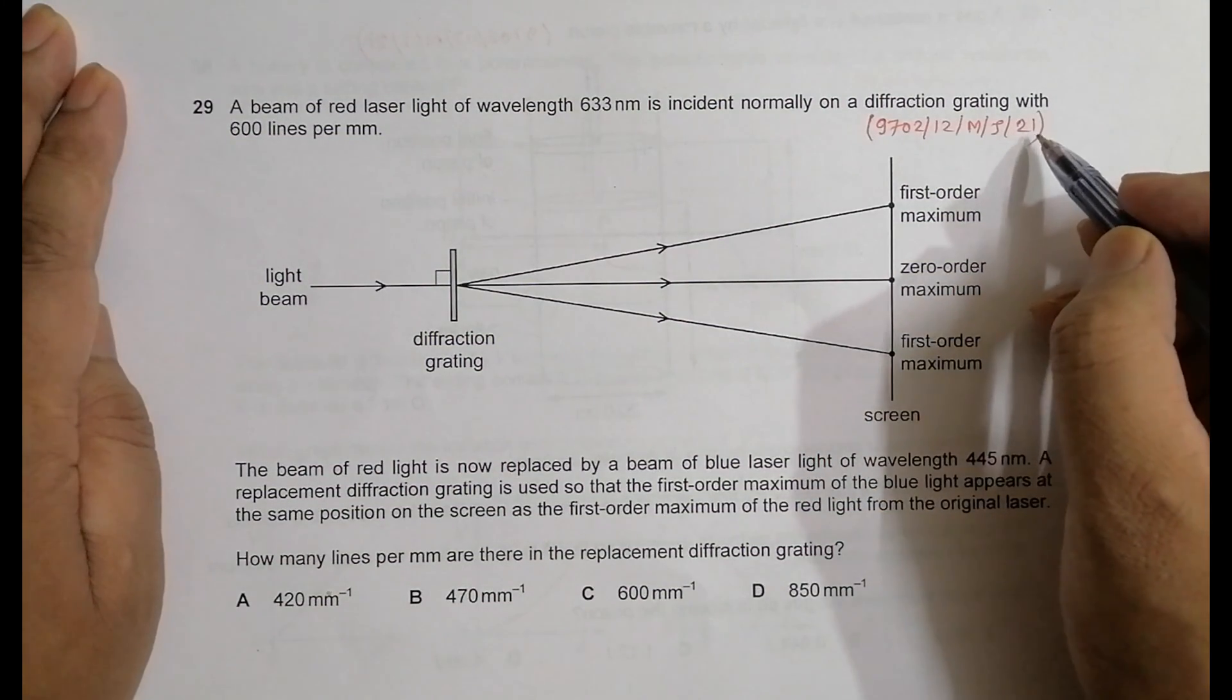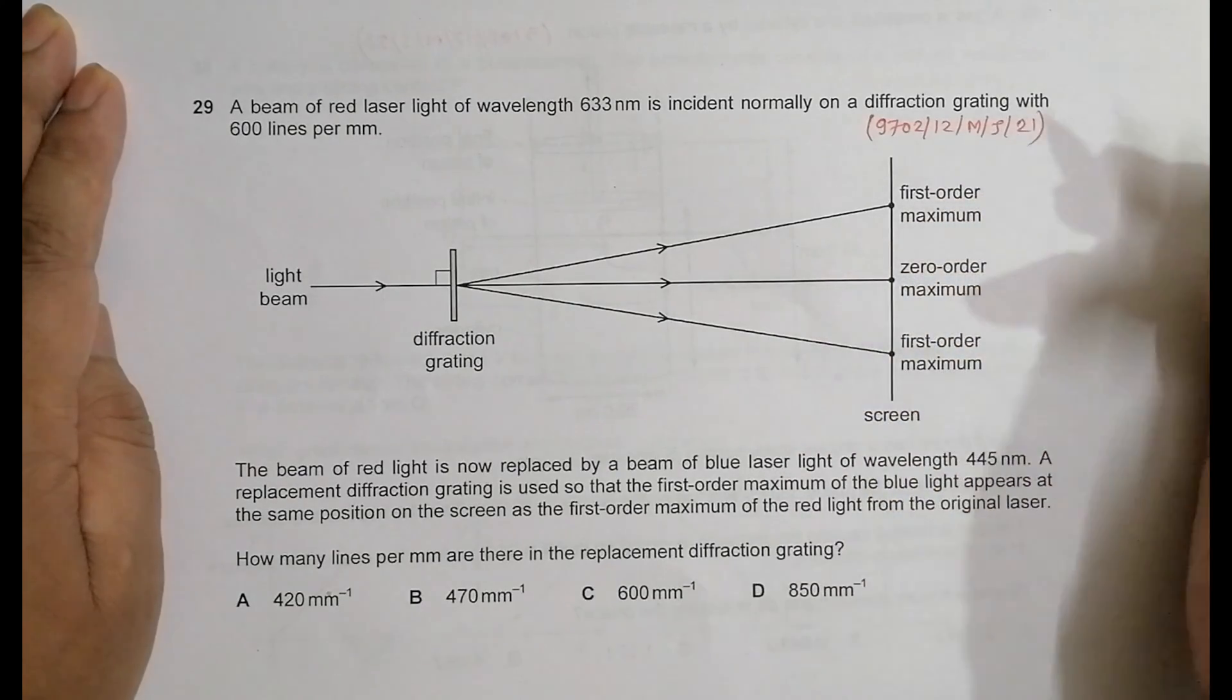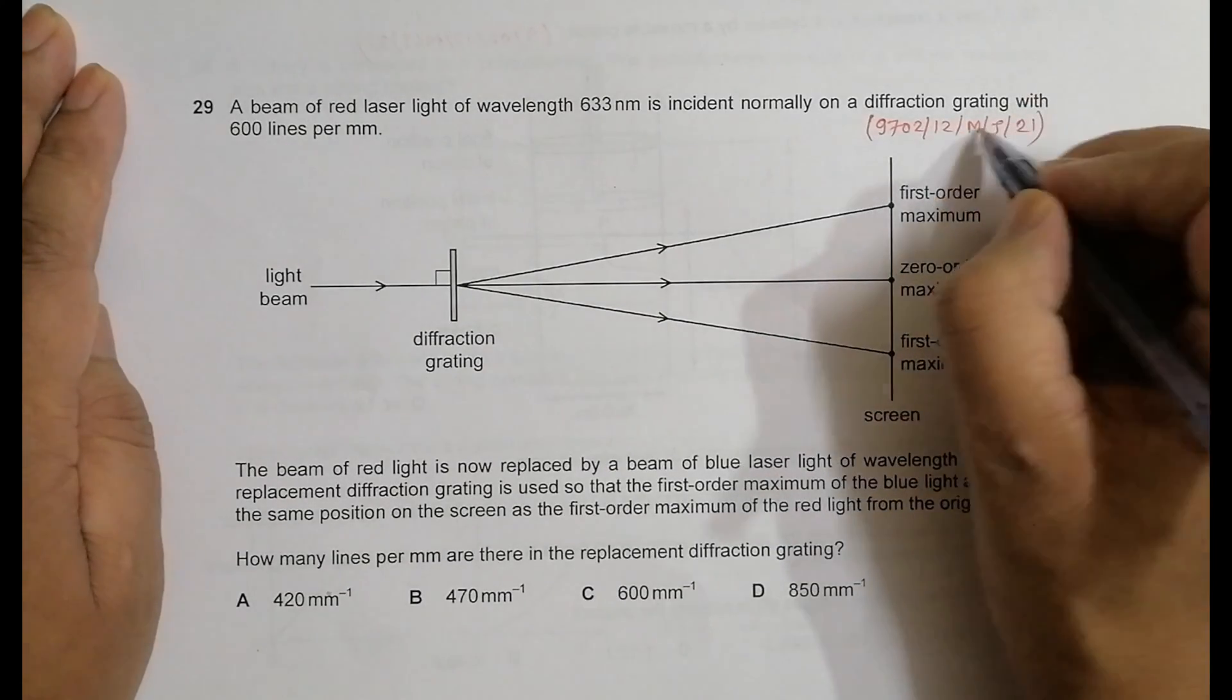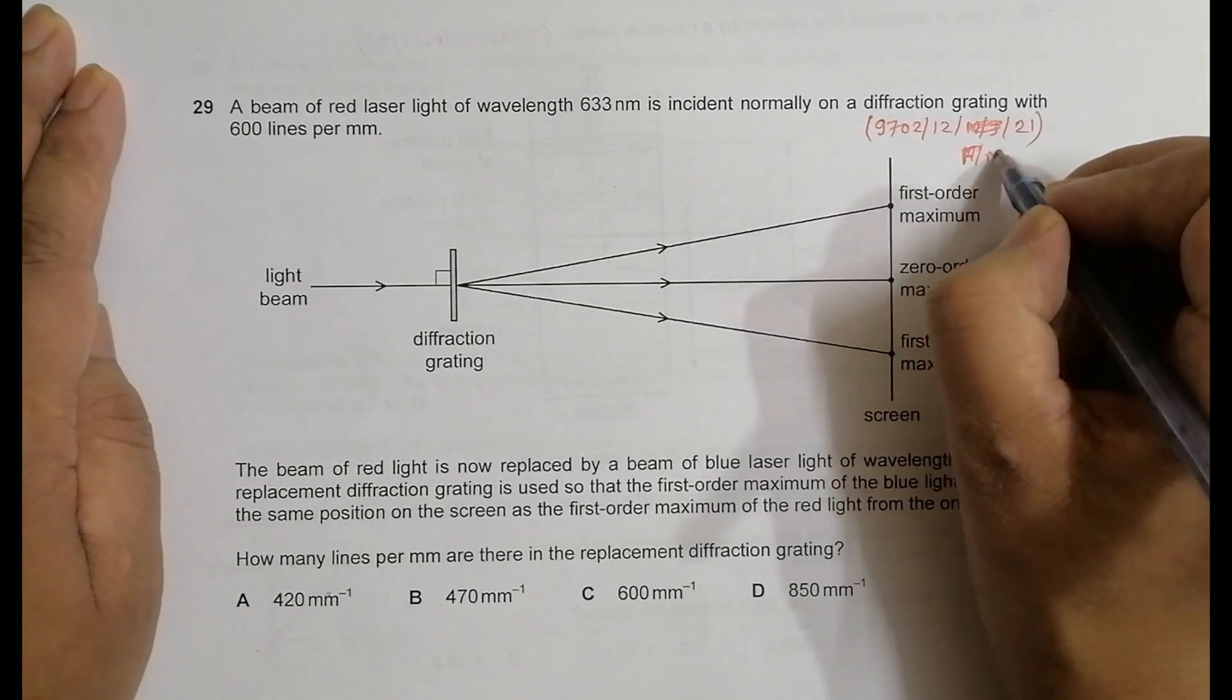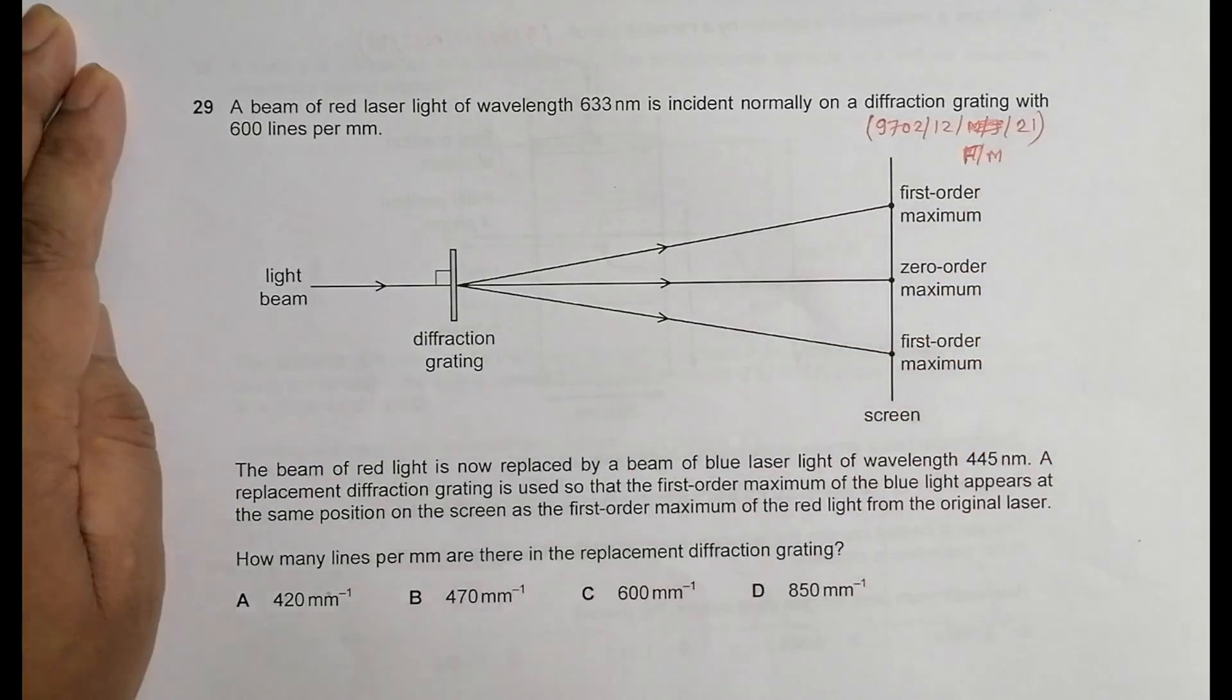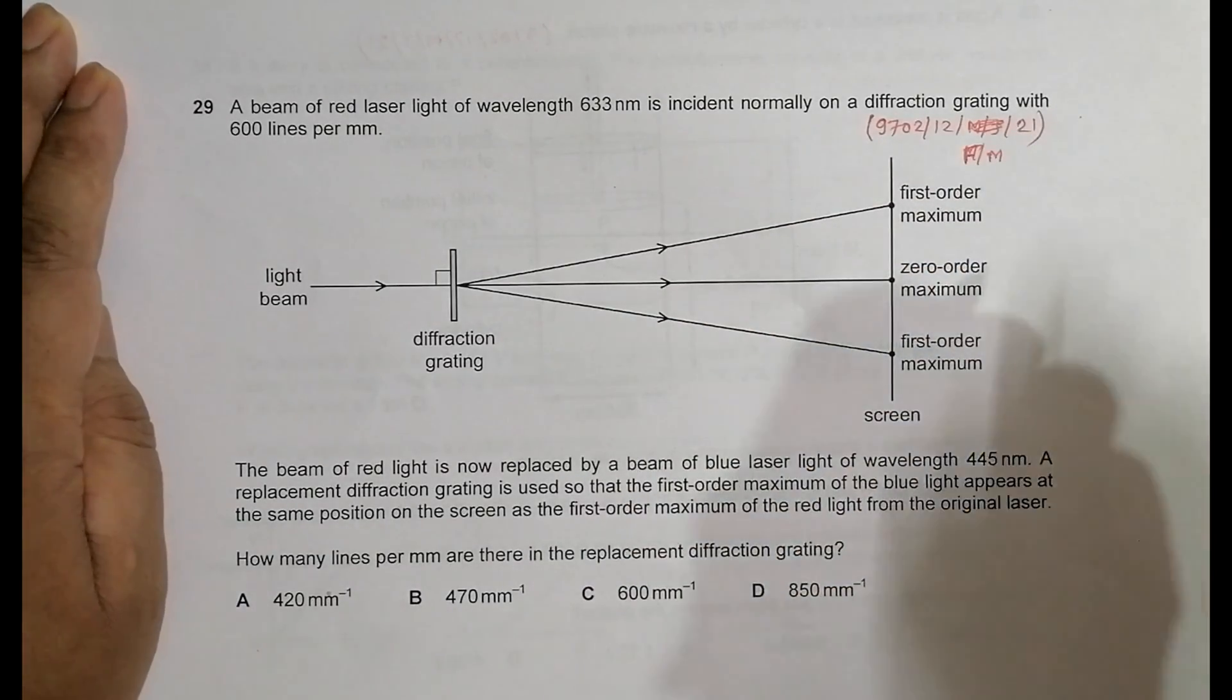Hello folks, this is 2021 May-June Paper 1.2—sorry, this is not May-June, actually it is February-March. I forgot. So it is February-March Paper 1.2, and the question number is 29.